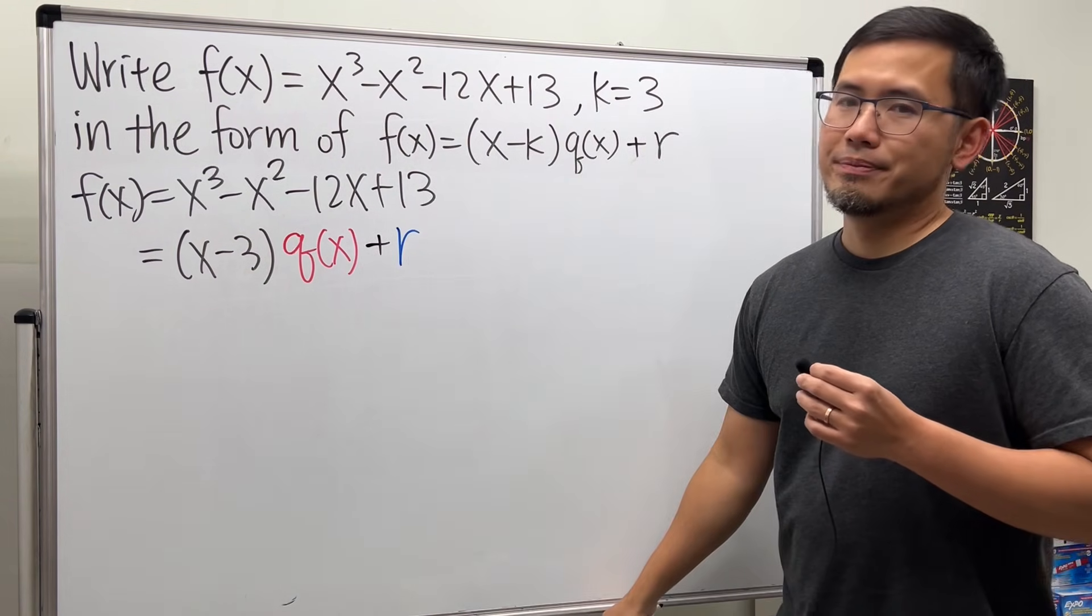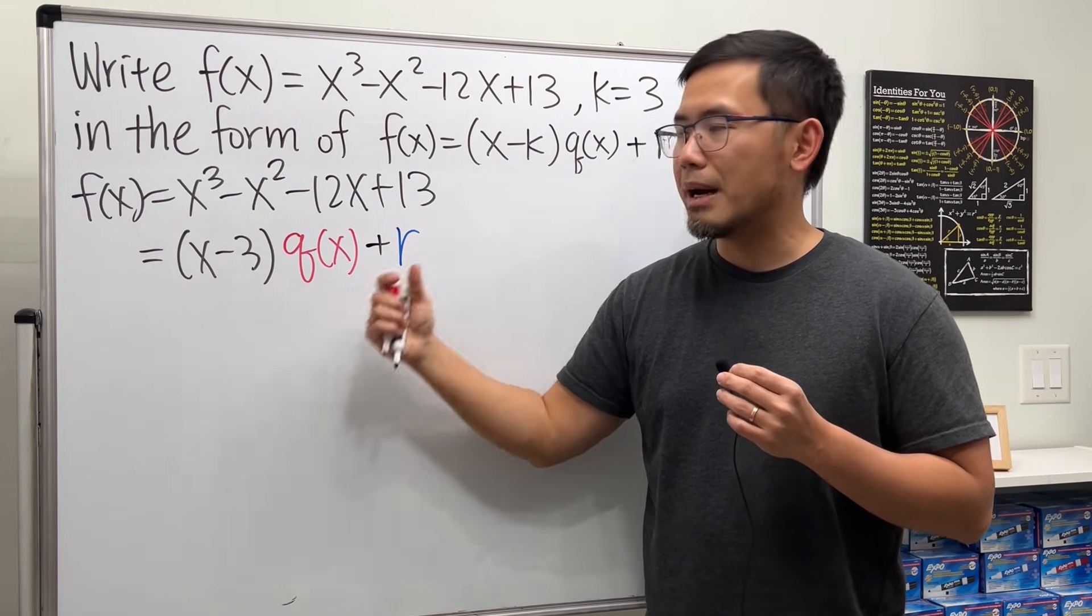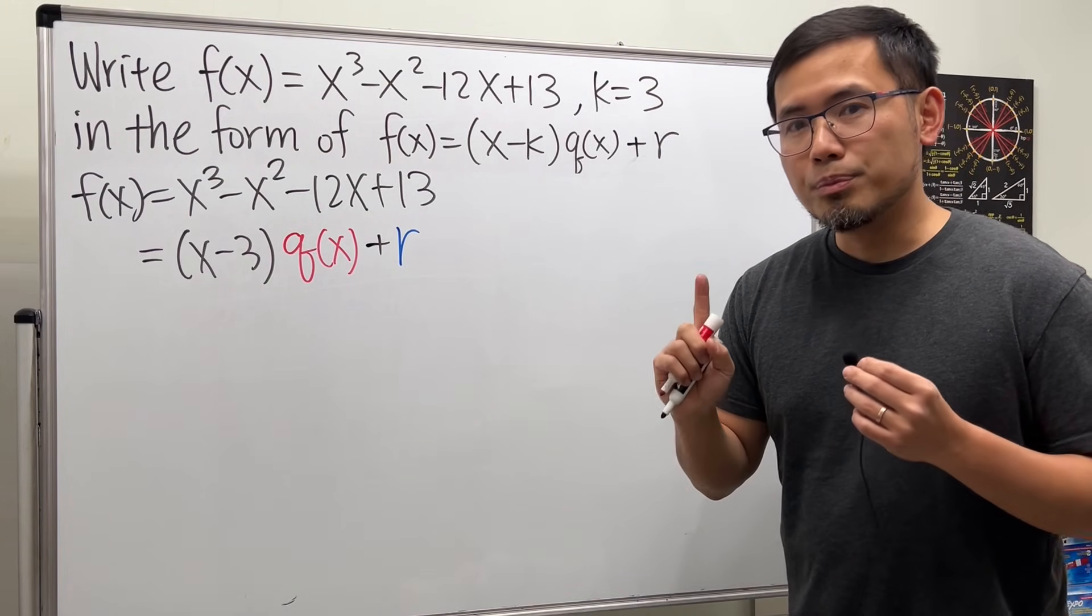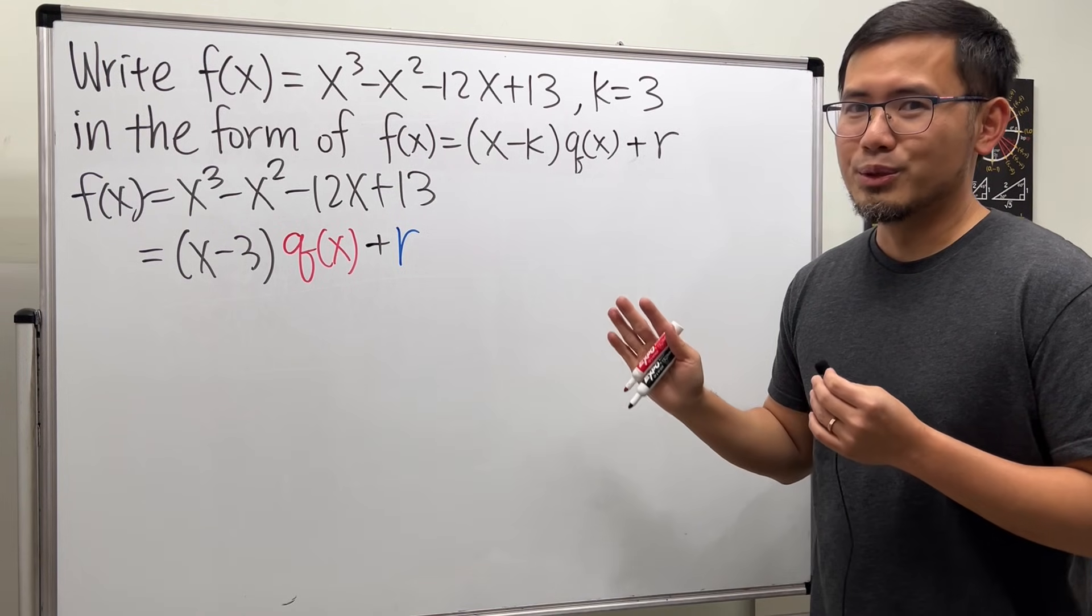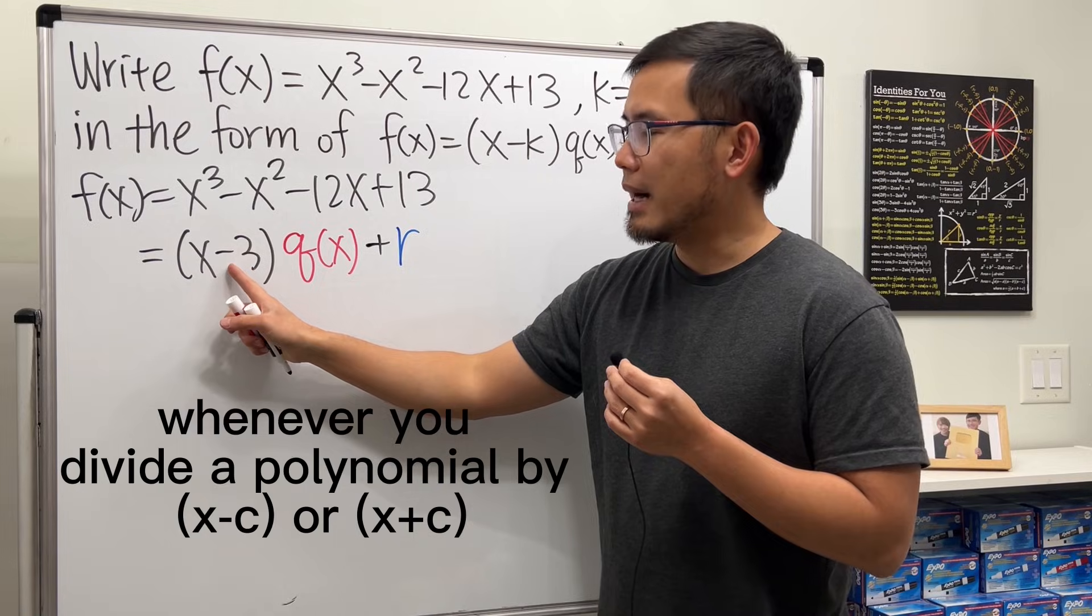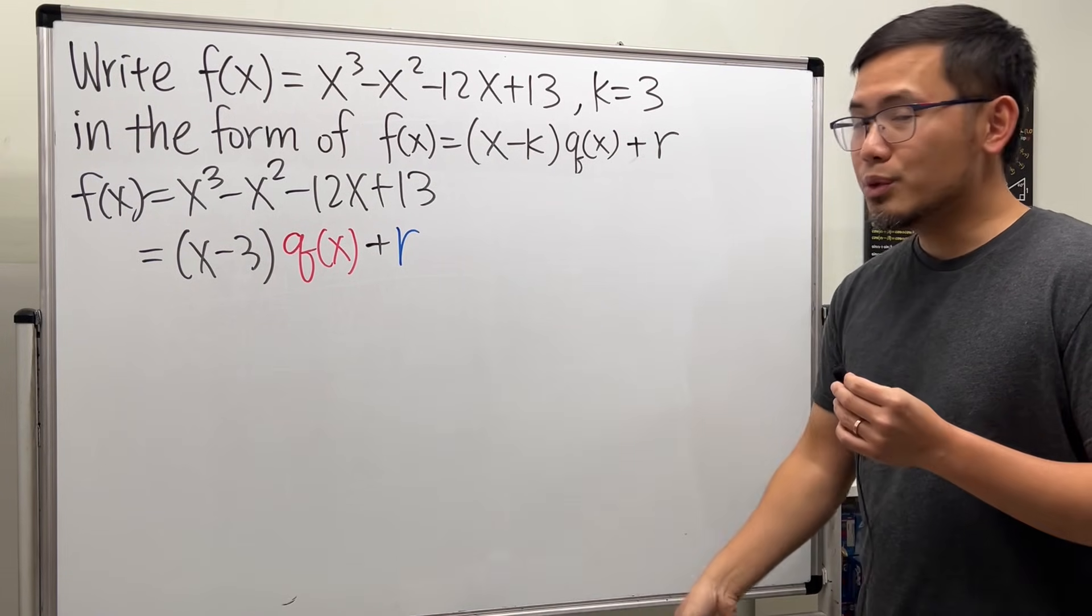So how are we going to do it? Well, we are going to take this polynomial and divide it by x minus 3. You have two choices now. You can do polynomial long division, which is going to be long. Or you can use synthetic division. Whenever you are dividing by x minus or plus a number, you can do synthetic division. How do we do it? Let me show you.